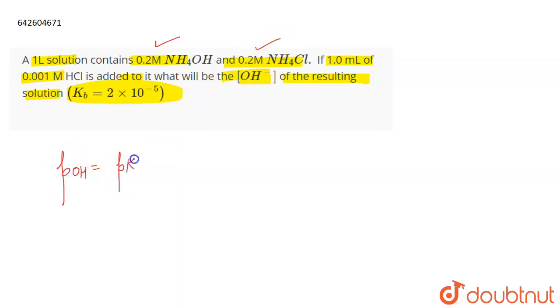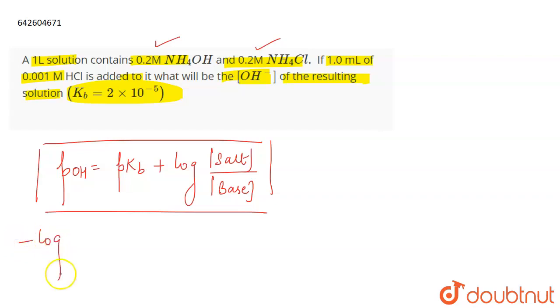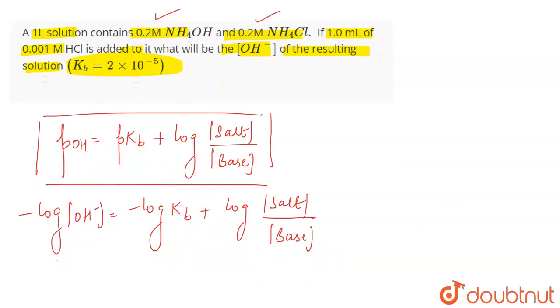So, this will be POH is equal to PKB plus log of the concentration of salt divided by the concentration of the base. This will be the Henderson equation. Now, POH can be written as minus log of OH-. PKB can be written as minus log of Kb plus log of salt upon base.